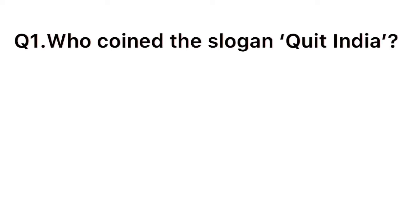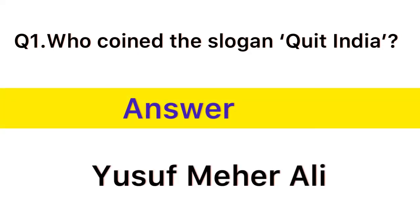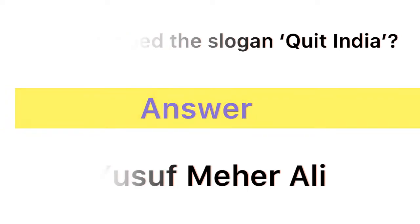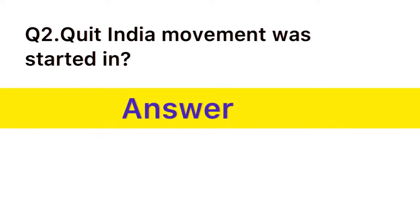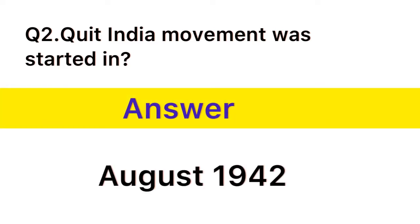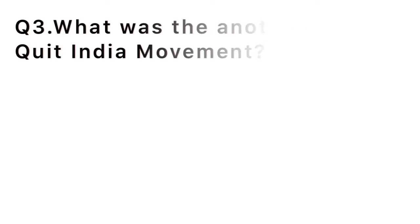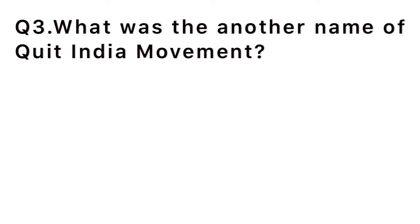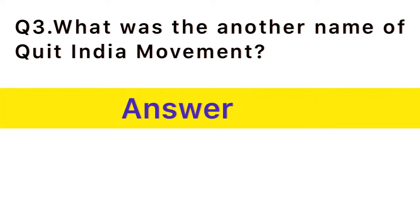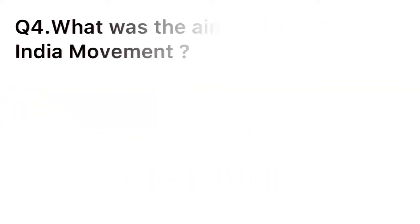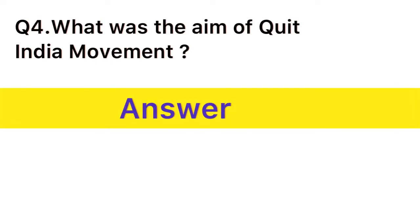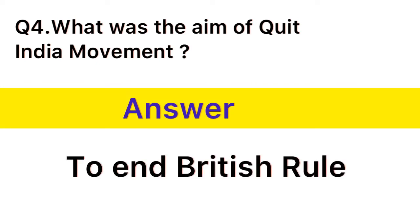Question number 1: Who coined the slogan Quit India? Answer: Yusuf Meher Ali. Question number 2: Quit India Movement was started in? Answer: August 1942. Question number 3: What was the another name of Quit India Movement? Answer: August Kranti. Question number 4: What was the aim of Quit India Movement? Answer: To end British rule.